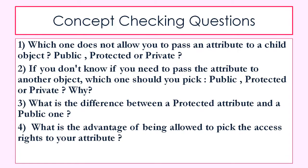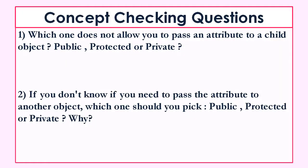Before we go, let's quickly answer some concept-checking questions. Which access right does not allow you to pass an attribute to a child object? The answer is private — it does not allow you to extend any attribute to child objects. If you don't know whether you need to pass an attribute to another object, which should you pick? The idea is that you want to limit information as much as possible, so if unsure, keep it private.